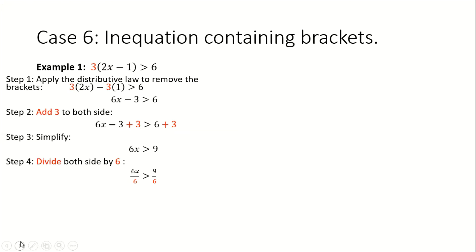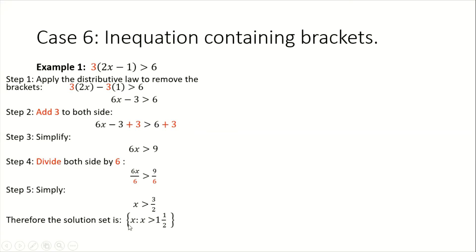The next step, we are going to simplify, and that will give us our solution. Note that 6x over 6 will give us x, and 9 over 6 will give us 3 halves. Therefore, our solution is x greater than 3 halves. We can also write 3 halves as a mixed number, 1 and 1 half. So therefore, our solution set is the set of all x values such that x is greater than 1 and a half.